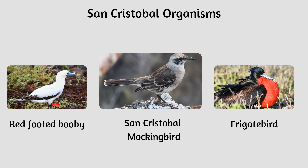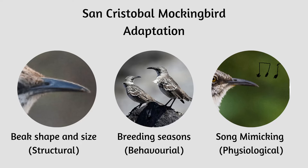Let's focus on the San Cristobal Mockingbird — a beautiful little bird that's endemic to the island. The San Cristobal Mockingbird's beak shape and size allow it to feed off small lizards, insects, and plants. This is an example of the Mockingbird's structural adaptation. The San Cristobal Mockingbird also has an interesting behavioural adaptation to climate: its breeding system goes with the time of year — they breed a lot during El Niño and don't breed at all during droughts. A cool physical adaptation is being able to mimic and imitate other bird songs to discourage birds from entering their territory.